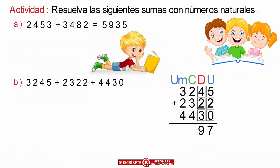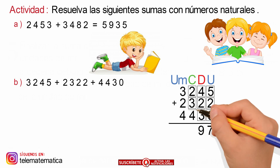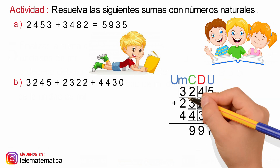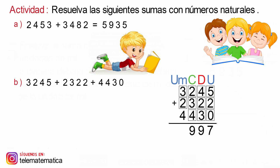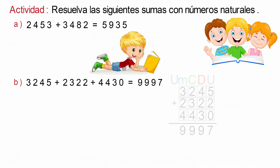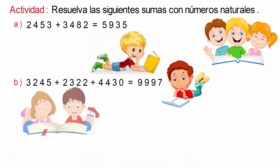En cuarto lugar, sumamos los elementos de la columna de las centenas: 2 más 3 es igual a 5, y 5 más 4 es igual a 9. Muy bien. Veamos otro literal.